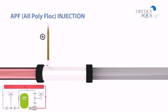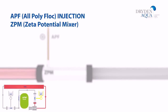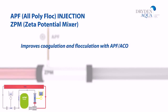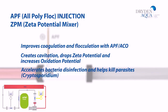APF is a strong coagulant and flocculant which should be injected in a Zeta potential mixer. The ZPM not only mixes the water to improve the process of coagulation and flocculation, it also cavitates the water to drop the Zeta potential and increase oxidation potential. This helps to remove bacteria and parasites by filtration.